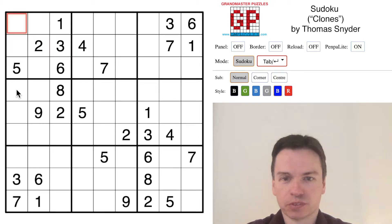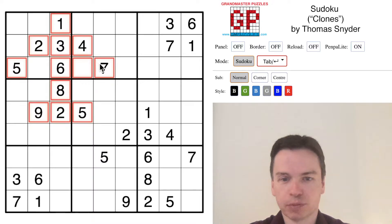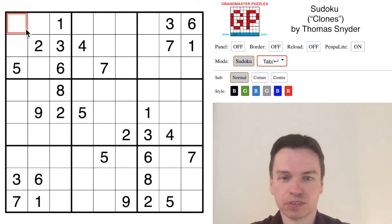We're here to solve the Sudoku puzzle I wrote called Clones. It's got these repeated clue groups. This group is the same as the one in the lower right, and these corner squares with three, six, seven, and one are also the same.